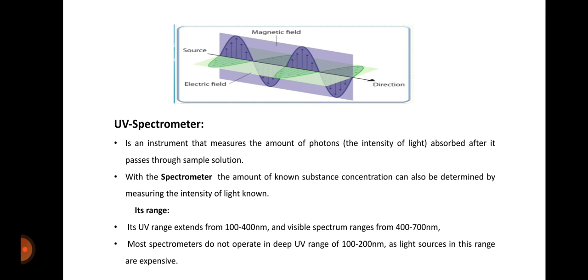What is the difference between UV spectrometer and UV spectrometry? The word UV spectrometry is used for the technique and the word UV spectrometer is used for an instrument which is used in the UV spectrometry technique.